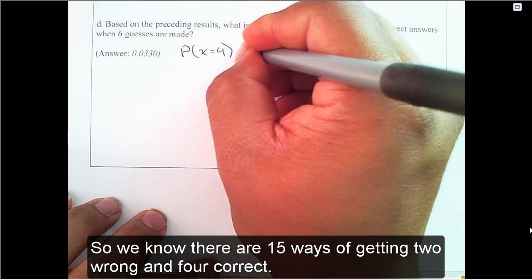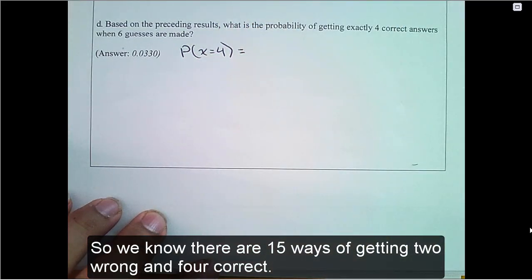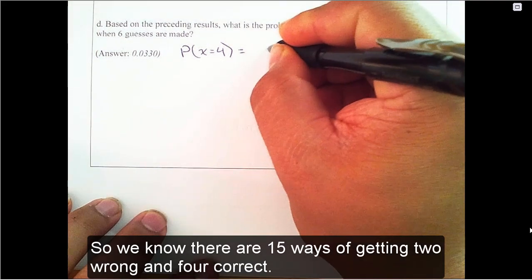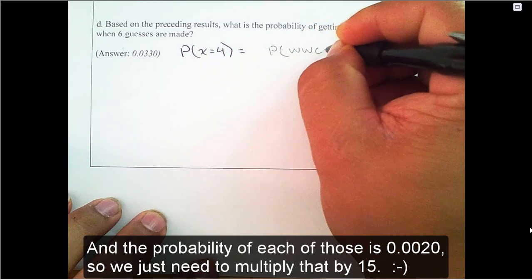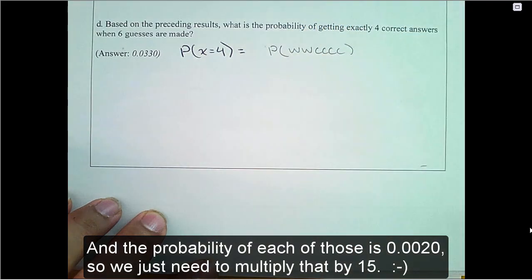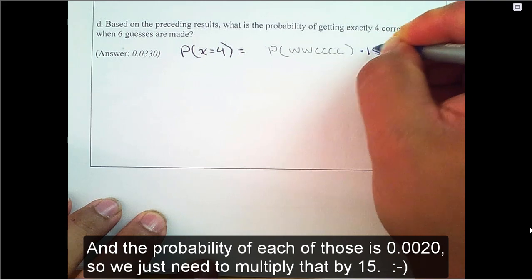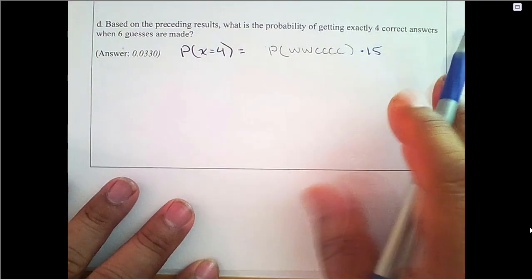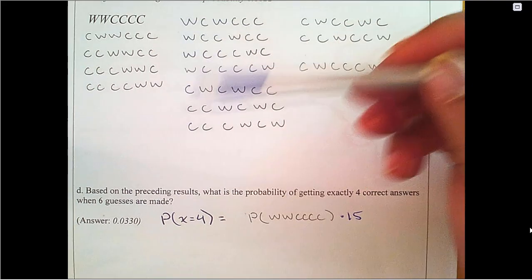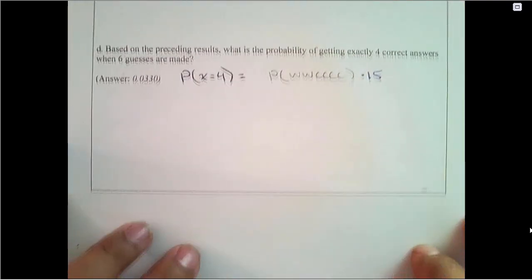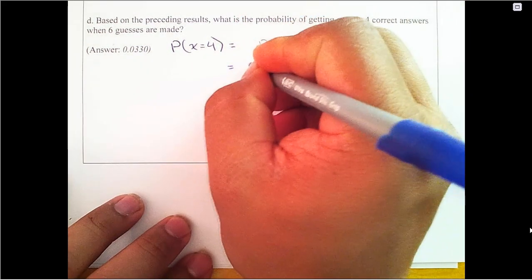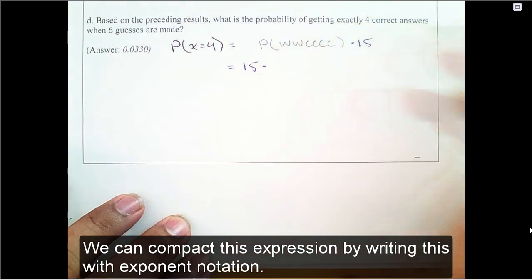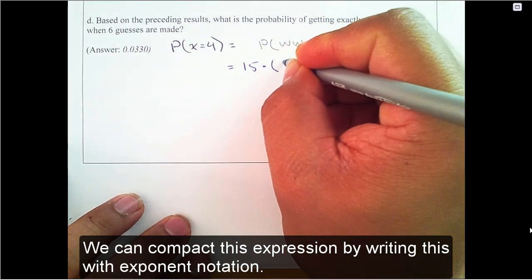So we know there are 15 ways of getting two wrong and four correct. And the probability of each of those is 0.0020, so we just need to multiply that by 15. We can compact this expression by writing this with exponent notation.